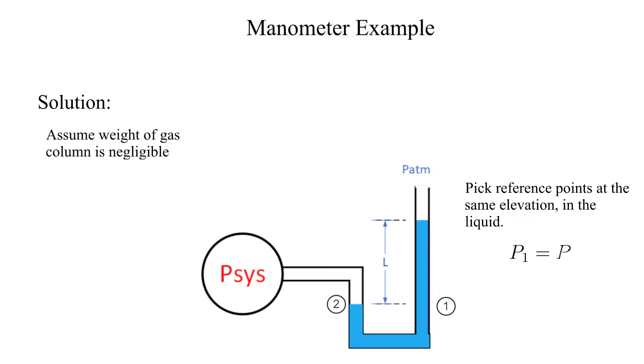P1 is now equal to P2. Since the weight of the gas is negligible, P2 is equal to the system pressure, which is the unknown.